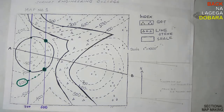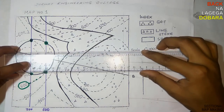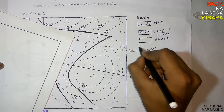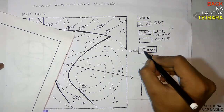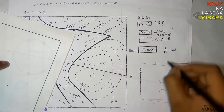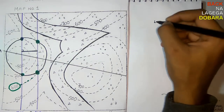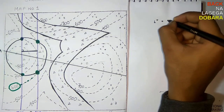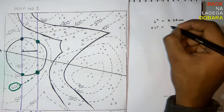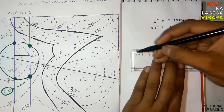Now draw a perpendicular line which will give the true dip. Note the scale here is 1 inch equal to 1000 feet. That is 1/10 inch gives 100 feet, which is the difference of contour lines. Also, 1 inch equals 2.54 centimeters, so 1/10 inch equals 2.54 centimeters, and we will be drawing in centimeters.